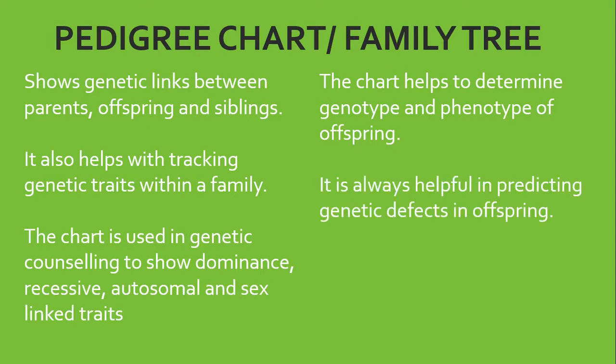Symbols used on the pedigree chart would include the circle, which is not shaded, which represents a female, pretty much smooth on the outside. The square, not shaded, represents the male. A vertical line represents the descendant. I am a descendant of my father. My father is a descendant of my grandfather.